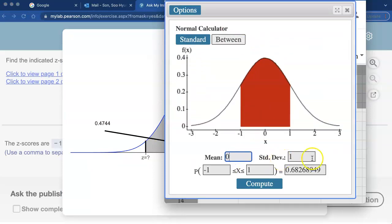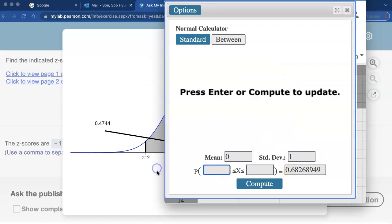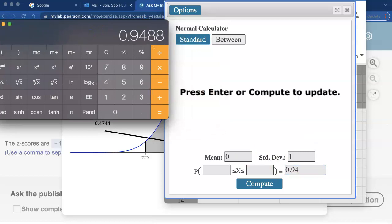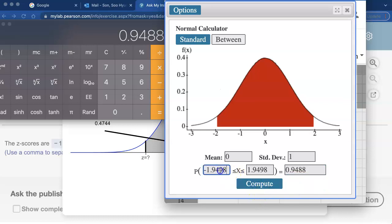Delete these boxes but type in how much area was included in the middle. Remember the area was 0.9488, so you type that in on the other side of the equal sign. When you hit compute, it's going to give you those z-scores that will have that much area included in the middle.